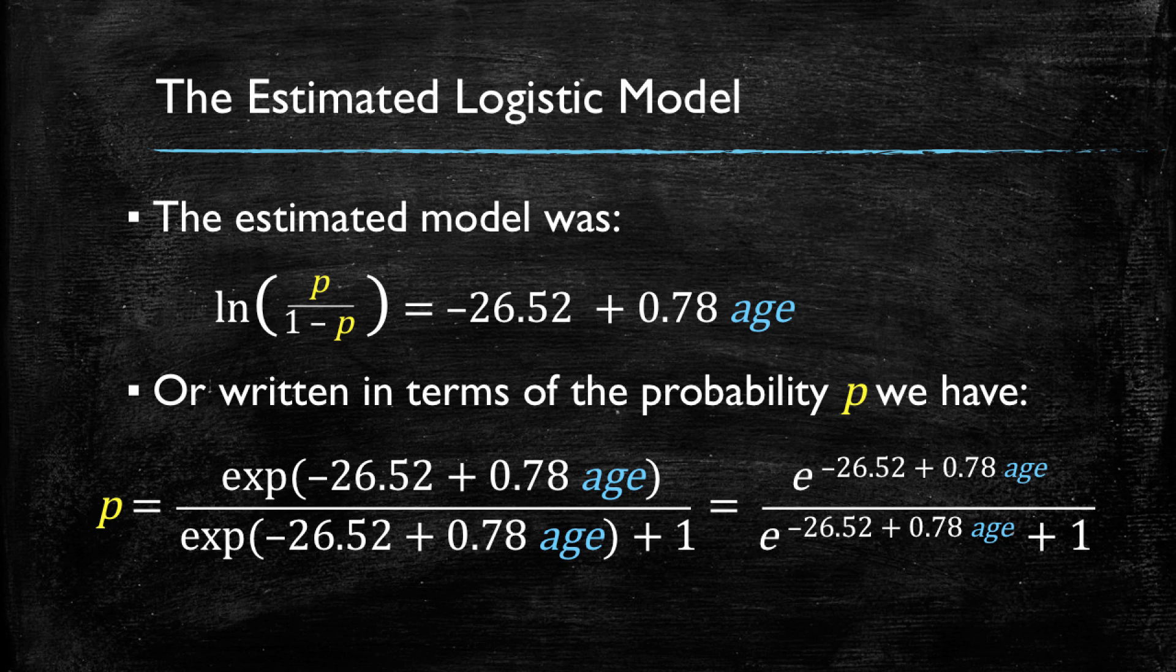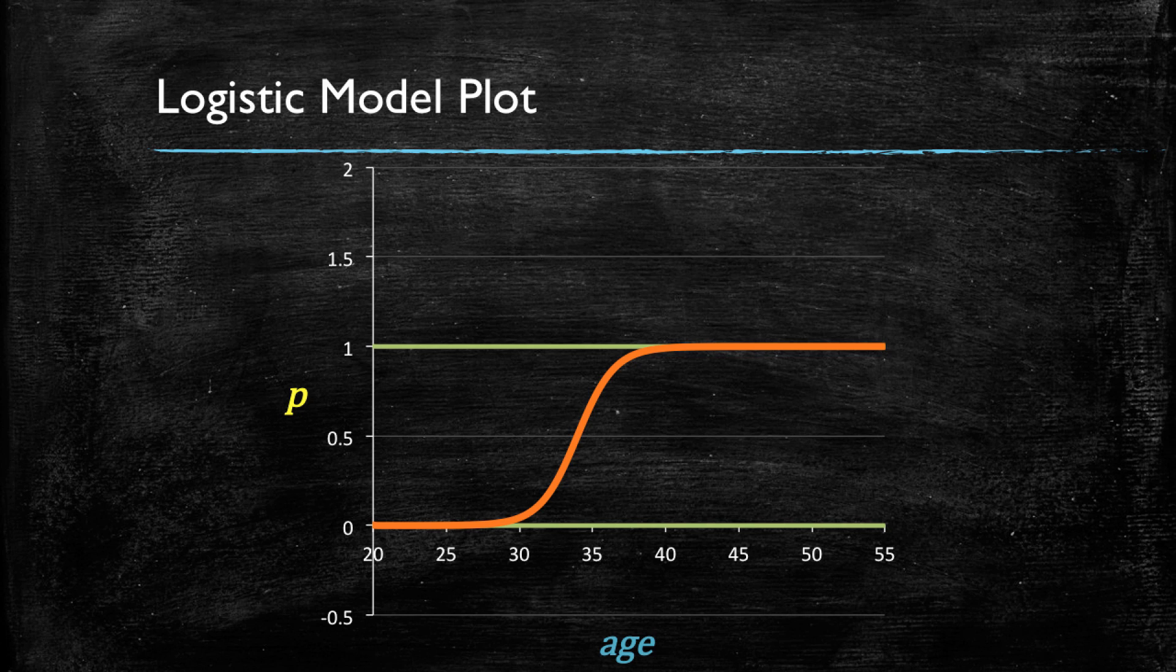If we now plot the probability against age using this expression, this is what we find. And note that the probability is no longer below 0 or above 1.